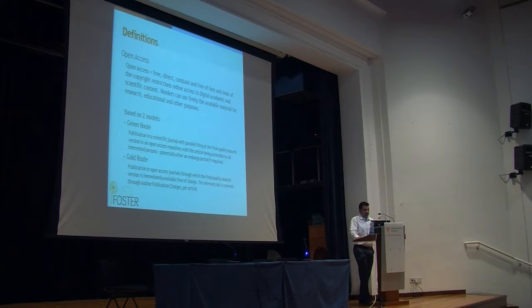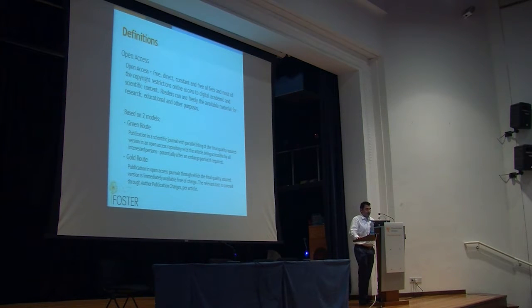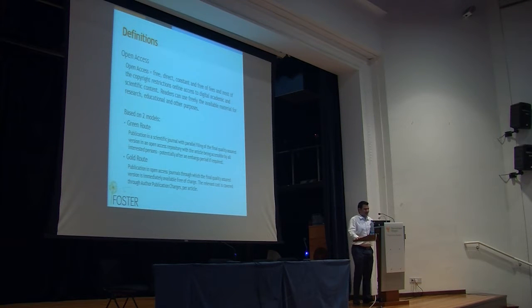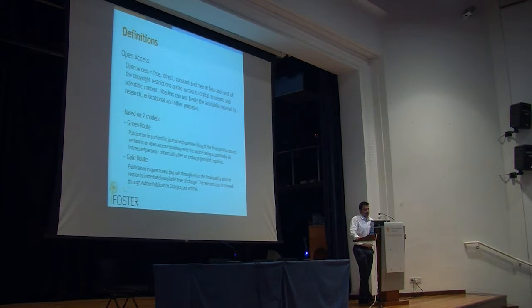The Gold Route is publication in Open Access Journals through which the final quality-assured version is immediately available free of charge. The relevant cost is covered through author publication charges per article. Of the two routes, we will probably follow the Green Route through a repository. The Gold Route is a little bit expensive for us right now — we're talking millions. So we're going to probably do the Green Route.